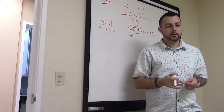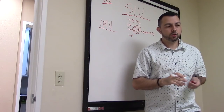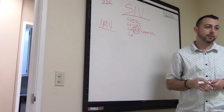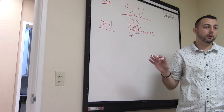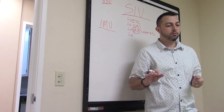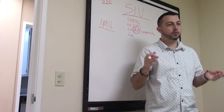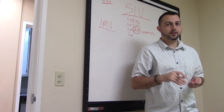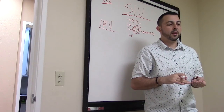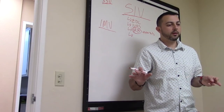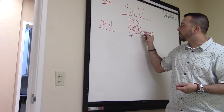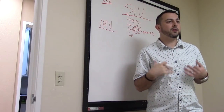As a CRA at the SIV, there's no patient source data to review yet, so you're mainly checking the regulatory binder. On Monday I was thrown into an SIV where the site used e-regulatory and electronic health records, had a local IRB, but did not yet have EDC or IWRS access.